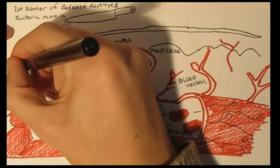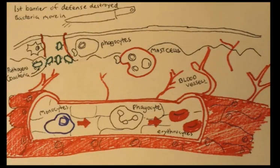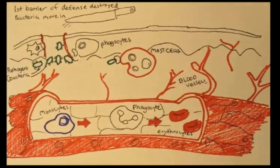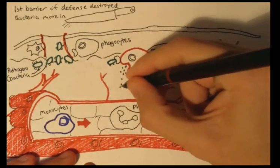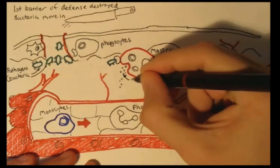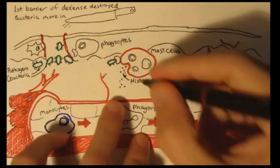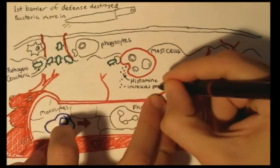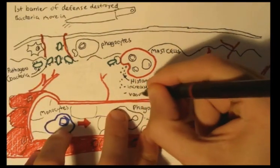One of the first things that happens is that mast cells are able to recognize the invasion and begin releasing their granules containing histamine, which causes a transient increase in vascular permeability and causes vasodilation of vessel walls.